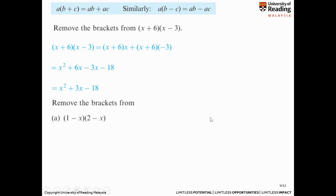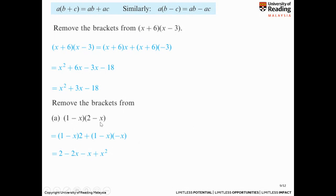Please pause for a while and do question a. Once you have finished, let's check your answer. You don't need to do every intermediate step. Expanding: 1 times 2 gives 2; minus x times 2 gives minus 2x; 1 times minus x gives minus x; then minus x times minus x gives plus x squared. Simplifying the like terms, your final answer is 2 minus 3x plus x squared.